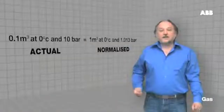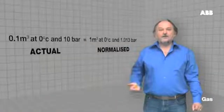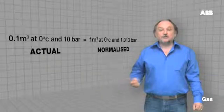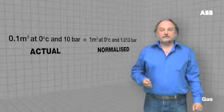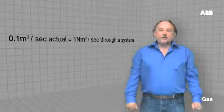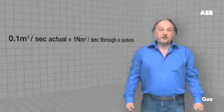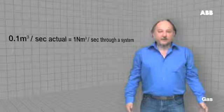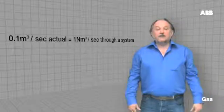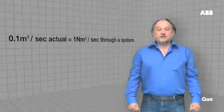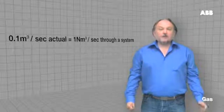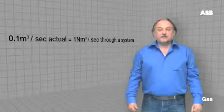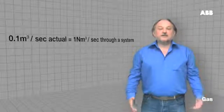Here we have an example of a comparison between normalised volume and actual volume. If we run both of these volumes through a system, 0.1 cubic metres actual per second is actually equal to one normal cubic metre per second. The volume flow is different in both cases. However, the mass flow rate is identical.